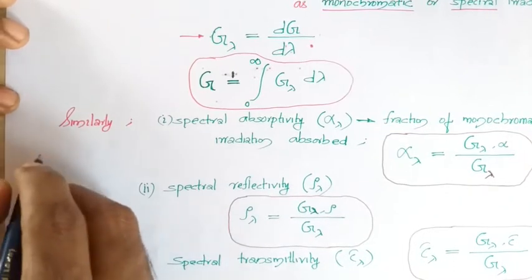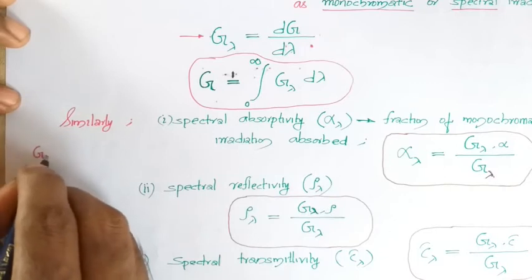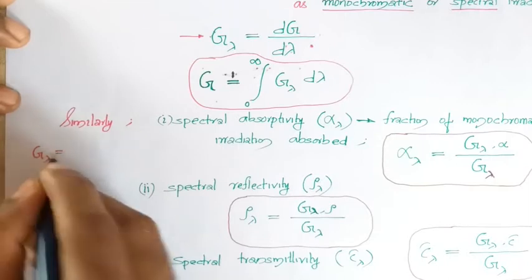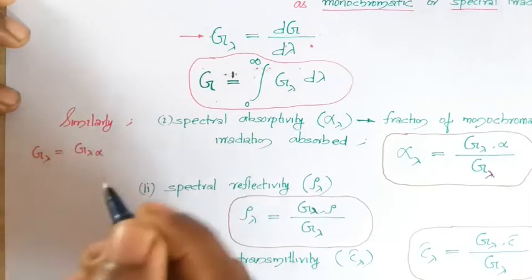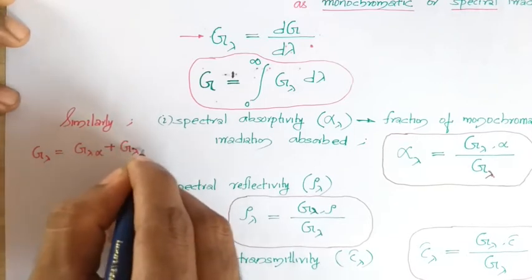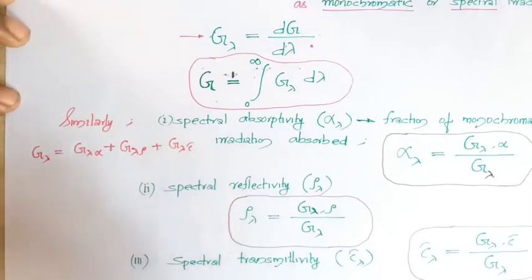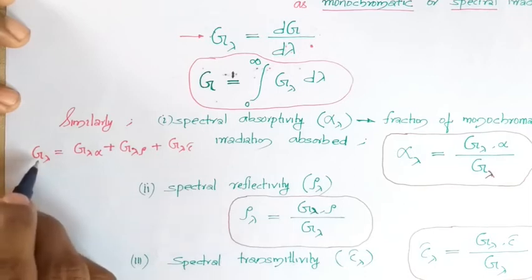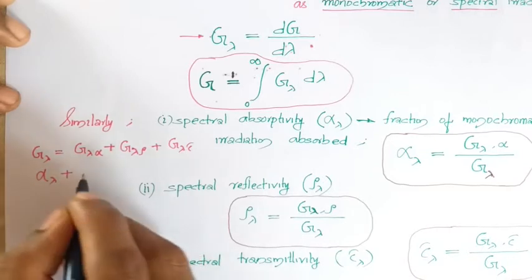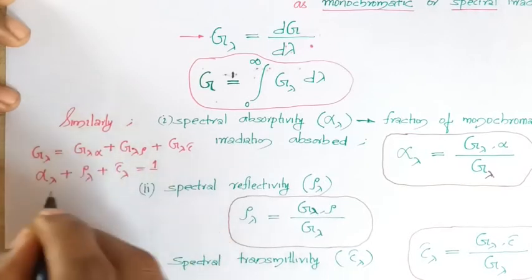For a particular wavelength lambda, the monochromatic or spectral irradiation G_lambda equals the sum of G_lambda absorbed, G_lambda reflected, and G_lambda transmitted. Taking the ratio with respect to G_lambda, the sum of spectral absorptivity, spectral reflectivity, and spectral transmittivity is also equal to 1.